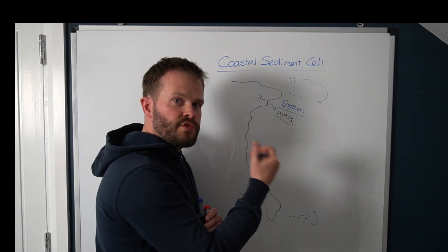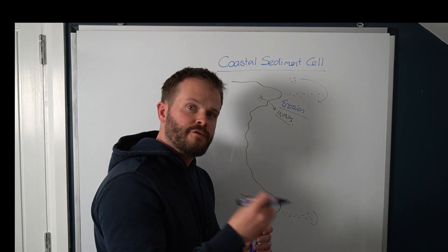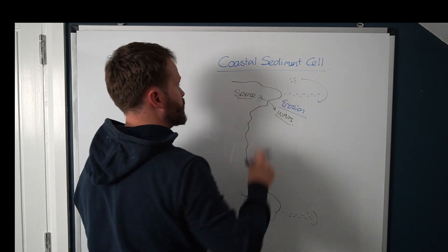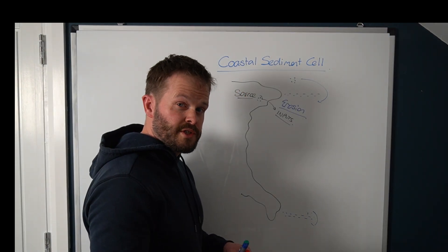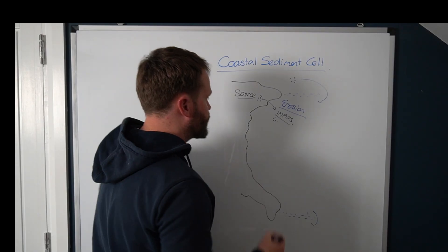So inputs of sediment into the coastal sediment cell. Now from where there's inputs, we call this the source. These are our source regions. Sediments in the system. What happens next?